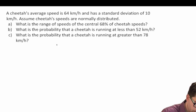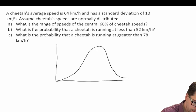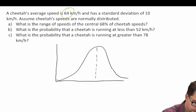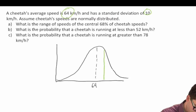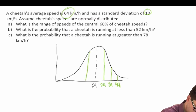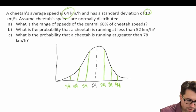Let's draw what this looks like. We know that we are working with a normal distribution, centered around our mean, which is given as 64 kilometers an hour. We have a standard deviation of 10 kilometers an hour. So the values become 74, 84, and 94 on the right side, and 54, 44, and 34 on the left side. We're asked what is the central 68% of cheetah speeds?